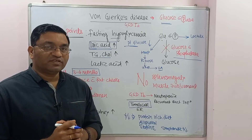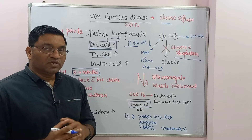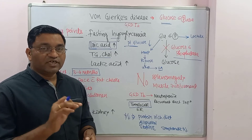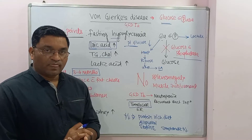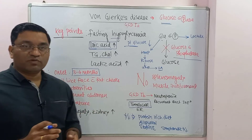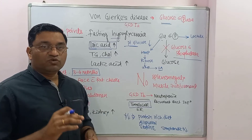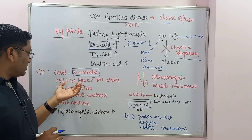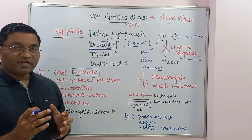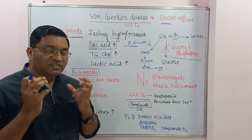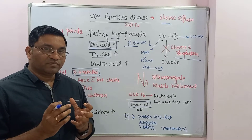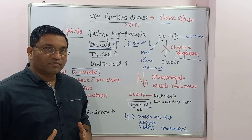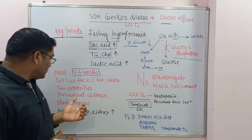Now, what are the clinical manifestations? The typical age of onset is 3 to 4 months of life. Manifestations include a doll-like face with fat cheeks, thin extremities, protuberant abdomen, and short stature.